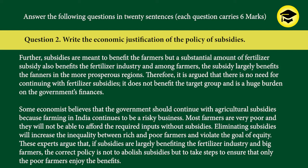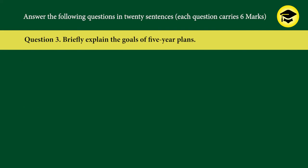Some economists believe the government should continue with agricultural subsidies because farming in India continues to be a risky business. Most farmers are very poor and will not be able to afford the required inputs without subsidies. Eliminating subsidies will increase inequality between rich and poor farmers and violate the goal of equity. These experts argue that if subsidies are largely benefiting the fertilizer industry and big farmers, the correct policy is not to abolish subsidies but to ensure that only poor farmers enjoy the benefits.